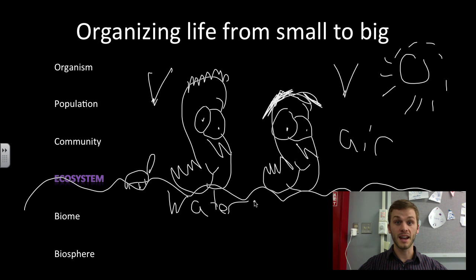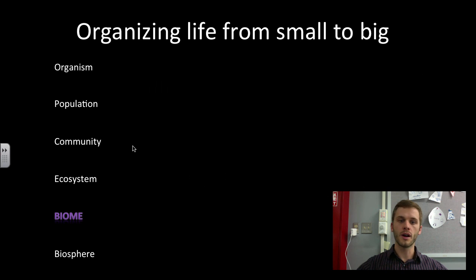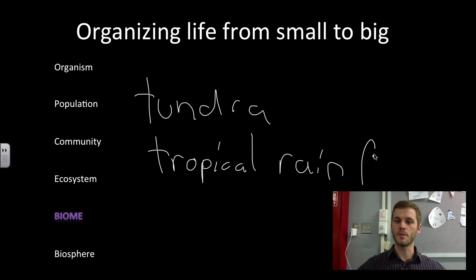Let's get even bigger. The next one is a biome. A biome is a collection of ecosystems that all have a similar climate. Examples of that might be the tundra. Another one might be a tropical rainforest, which would be great to visit. I think that'd be a lot of fun. So biomes is a collection of ecosystems that all have a similar climate.